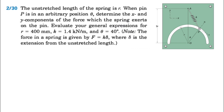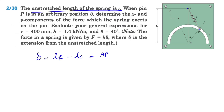From the question, we know that the force in the spring is given by F = k times delta, where k is the spring constant and delta is the extension from the unstretched length. Basically, delta is the final length minus the initial length. So lf here would be AP — the final length of the spring — and l₀, the initial length, is the unstretched length r given in the question.